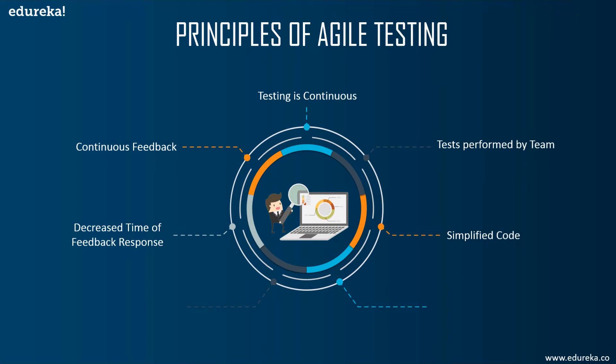The fifth principle is simplified and clean code — all defects raised by the agile team are fixed within the same iteration, helping keep the code clean and simplified. Sixth is less documentation — agile teams use a reusable checklist and focus on the test rather than incidental details. Finally, the seventh principle is test-driven — in agile methods, testing is performed at the time of implementation, whereas in traditional processes, testing is performed after implementation.